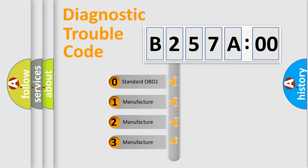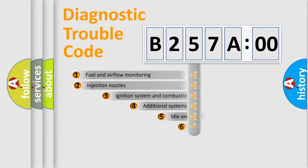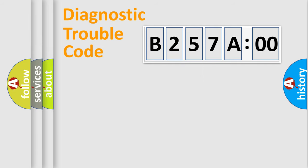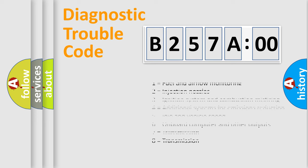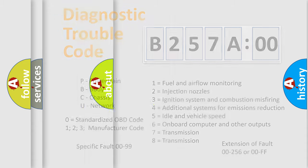If the second character is expressed as zero, it is a standardized error. In the case of numbers 1, 2, or 3, it is a manufacturer-specific error. The third character specifies a subset of errors. The distribution shown is valid only for the standardized DTC code. Only the last two characters define the specific fault of the group. The add-on to the error code serves to specify the status in more detail, for example, a short to ground. Let's not forget that such a division is valid only if the second character code is expressed by the number zero.